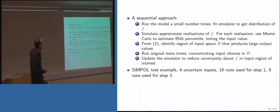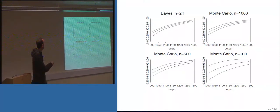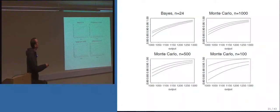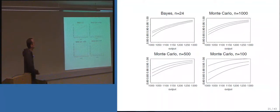With a test example of four uncertain inputs, starting with 16 model evaluations, identifying a further 8 important inputs — 24 total — the approach gave point-wise estimates of the CDF with bounds representing uncertainty about the function. With 24 runs it was comparable to what you might get with a thousand Monte Carlo evaluations, and certainly quite a bit better than moderate Monte Carlo sample sizes.